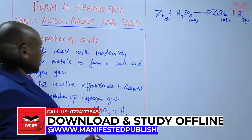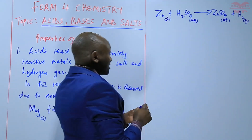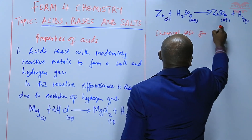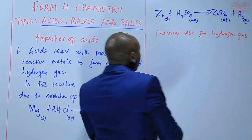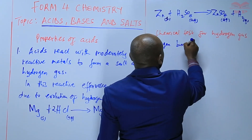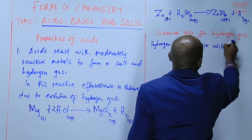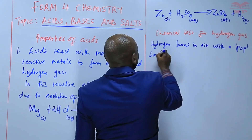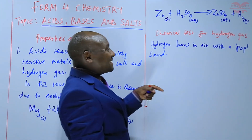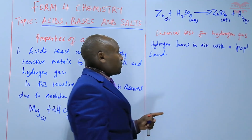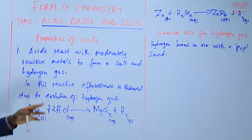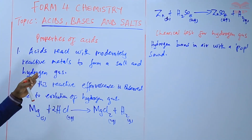How do we know the gas being produced is hydrogen gas? We look at the chemical test for hydrogen gas. Hydrogen gas burns in air with a pop sound. When hydrogen burns in air rich in oxygen, a pop sound is produced, and that pop sound indicates that the gas is hydrogen gas. So any time an acid reacts with a metal, there will be the formation of a salt and hydrogen gas.